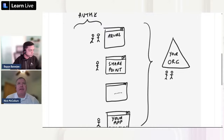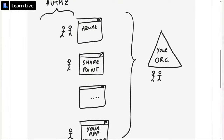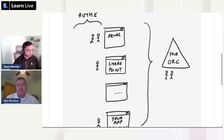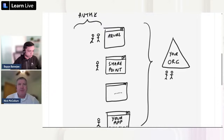Thousands of applications are natively integrated with Azure Active Directory, including first-party offerings like Office 365, SharePoint, Exchange, and Teams, as well as third-party offerings like Salesforce, ServiceNow, and Box. But Azure Active Directory is an open identity provider, which means you can also integrate it with your own line-of-business applications and let your organization's users sign in with their existing credentials, taking full advantage of all those governance features.